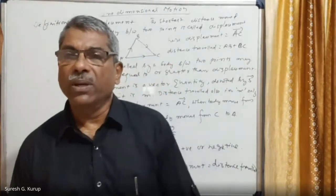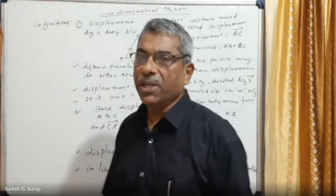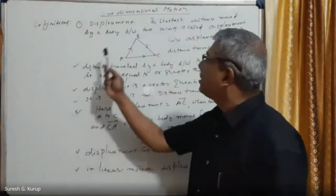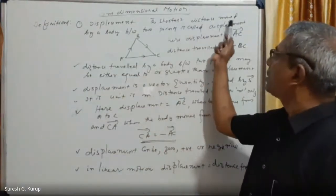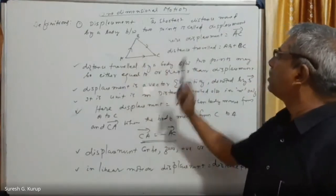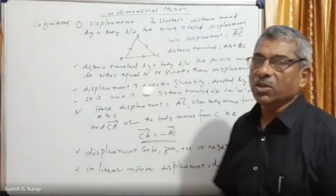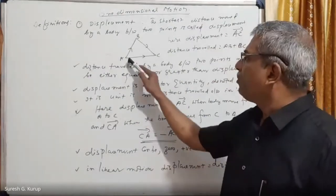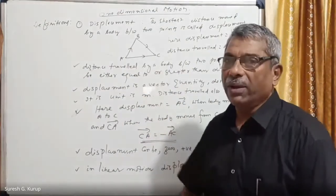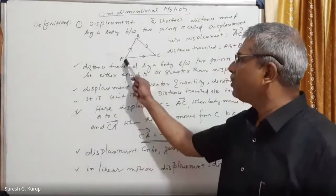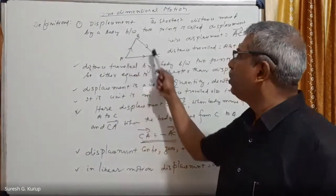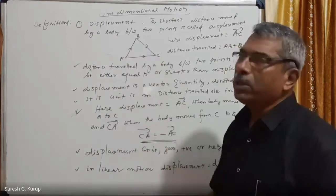Now we discuss displacement. Displacement is the shortest distance moved by a body between two points. For example, if a body is moving from A to C through B as shown in the figure, the initial position is A and the final position is C, but the body moves through another point B.